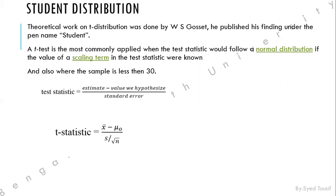The t-test formula is: t equals the estimated value minus the hypothesized value, divided by the standard error. We use this Student distribution when we have some hypothesis — some criteria to check — and we want to verify whether that criteria is being satisfied or not.